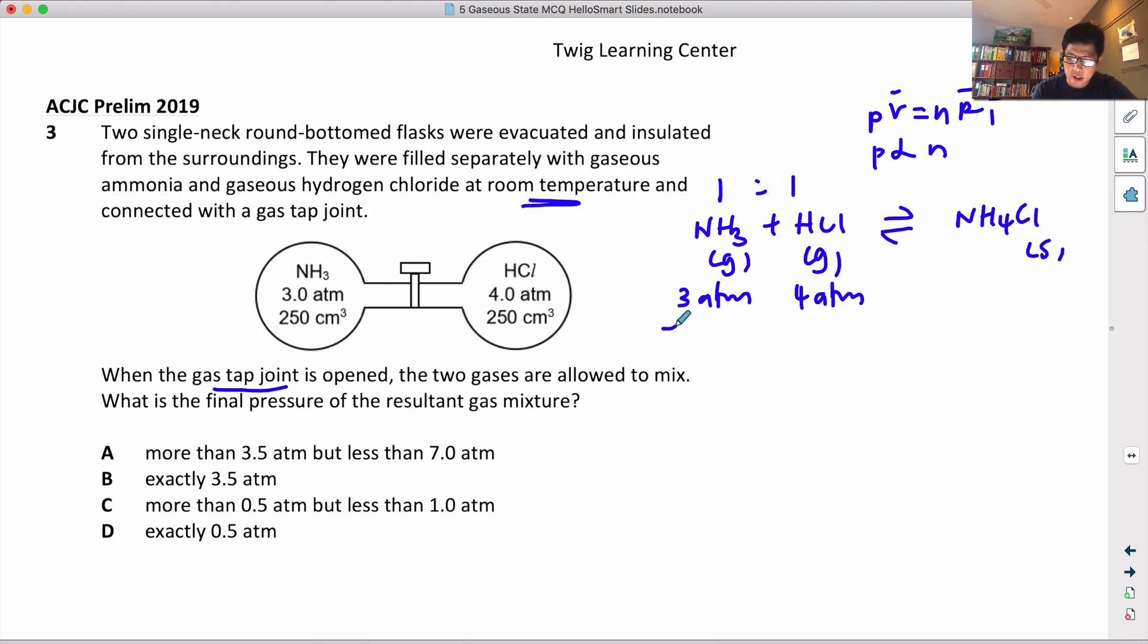If they do react, ammonia is the limiting one, minus 3 atm. So HCl also will react minus 3 atm. In the end there's no more ammonia but there's 1 atm of HCl. This is a solid so I don't really bother about it.